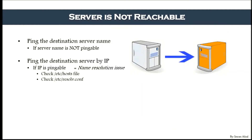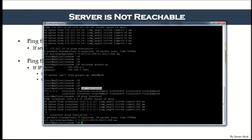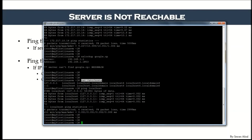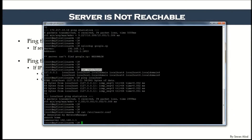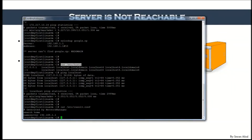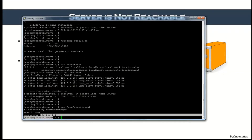If the entry is not in /etc/hosts, the next file to check is /etc/resolv.conf. This file contains your DNS server information. Run 'cat /etc/resolv.conf' — this is where the DNS server address is saved, telling your machine where to go to resolve a hostname to an IP address.